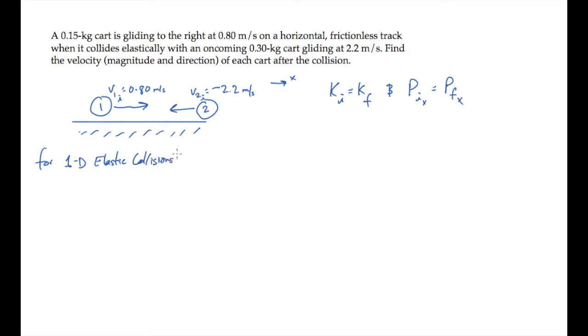If you do this, you find that the final velocity of the first cart is given by this expression: difference in the masses over the sum times the initial velocity of cart one, plus twice the mass of cart two over the sum of the masses, times the initial velocity of cart two. And the final velocity of the second cart, the velocity after the collision, is given by a similar expression that's shown here.